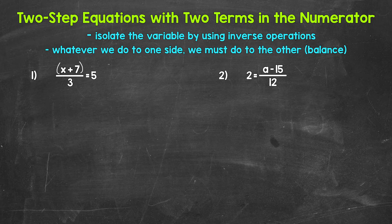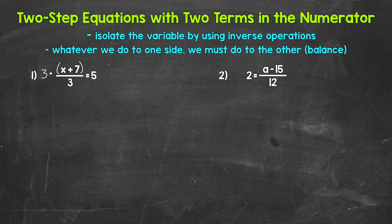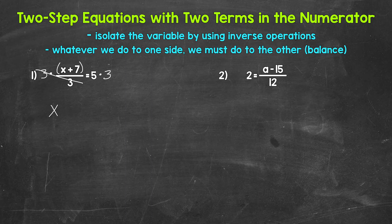We need to isolate x using inverse operations, going in reverse order of operations. We have addition and division here, but the addition is grouped in parentheses, and then we have division. We need to undo the division first — get rid of the fraction. The inverse of division is multiplication, so let's multiply both sides of the equation by three. On the left side, dividing by three and multiplying by three cancels out, leaving us with just x plus seven.